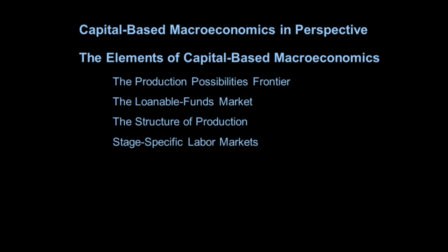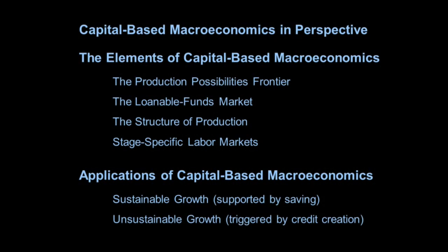Stage-specific labor markets — we know what labor markets look like: supply and demand for labor. The unique thing about the Austrians is that to understand the business cycle, you can't just look at the labor market. You have to look at how that market works at different stages of production, because it works differently depending on changes in the interest rate. The application here is sustainable growth — showing how the economy can grow without a bust — and on the other hand, how unsustainable growth gives you a bust. One is based on saving, the other on credit creation.